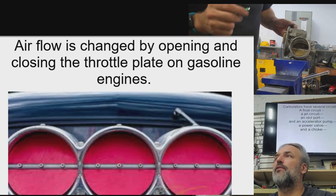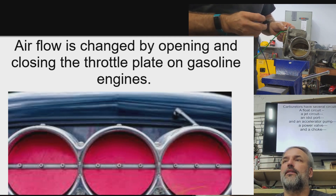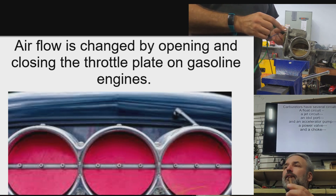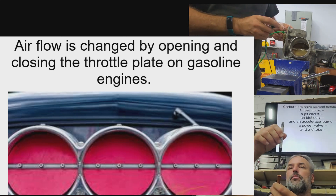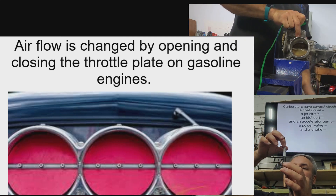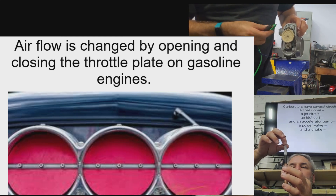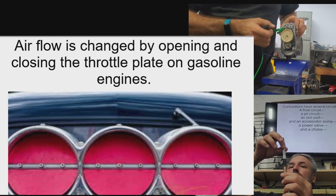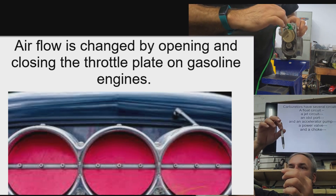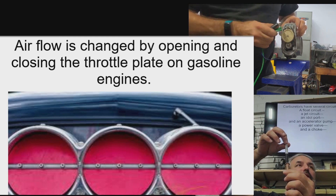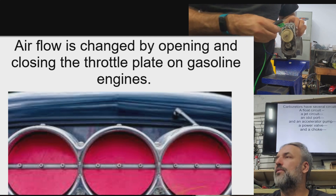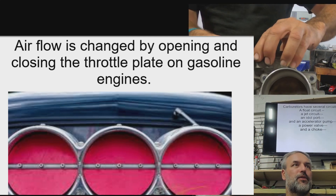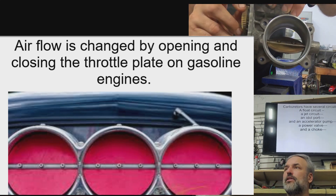Carburetors have several circuits. A float circuit controls the fuel level. A jet circuit — there's a thing called a jet with needles and seats; the seat is the jet, like a tube, and there's a needle shaped like a pen. When you open the throttle, vacuum pulls the needle out — the more vacuum the venturi gets, the more it pulls it out. When the needle is down farther, it blocks fuel flow more; as it goes up, it opens up more, allowing fuel to be sucked in through the venturi. There's also an idle circuit with an idle adjuster screw that controls the air-fuel mixture at idle.